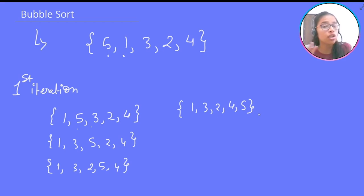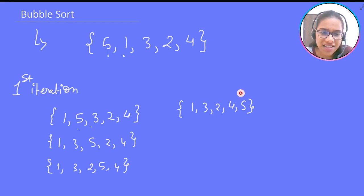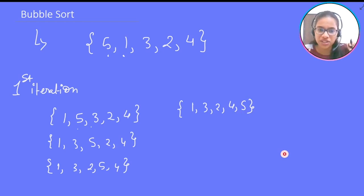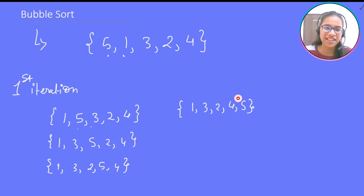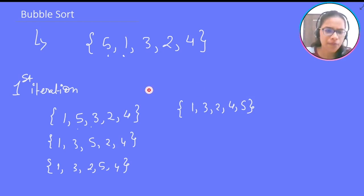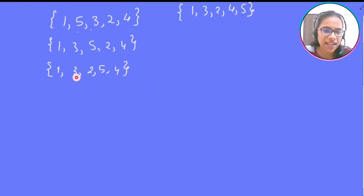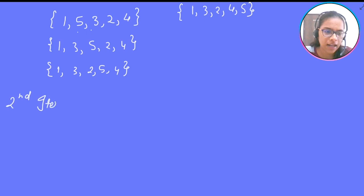Is this array sorted? No, it is not. But you can see that the largest element is at its right position — the last position. Now we want to move the second largest element to its correct position. The computer doesn't know the array is sorted by arrangement, so we need to have one more iteration — a second iteration.